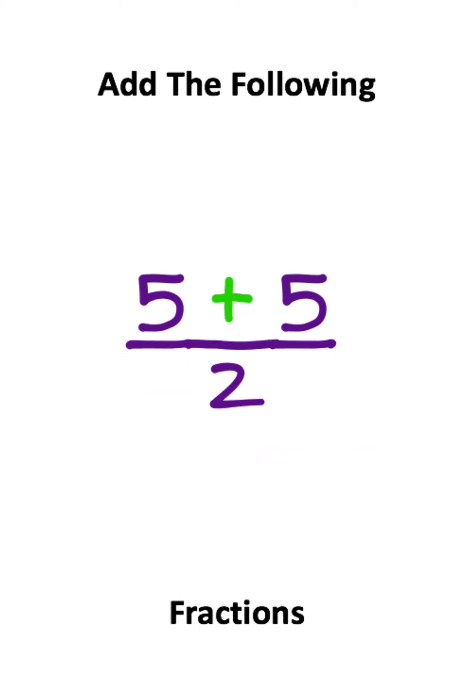So I can set this as the common denominator, and this means I only have to add the fives. Five plus five is ten, and ten divided by two is five.